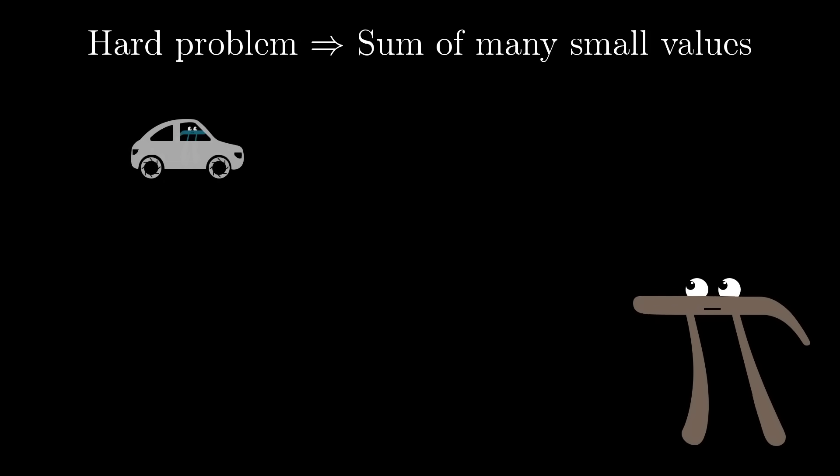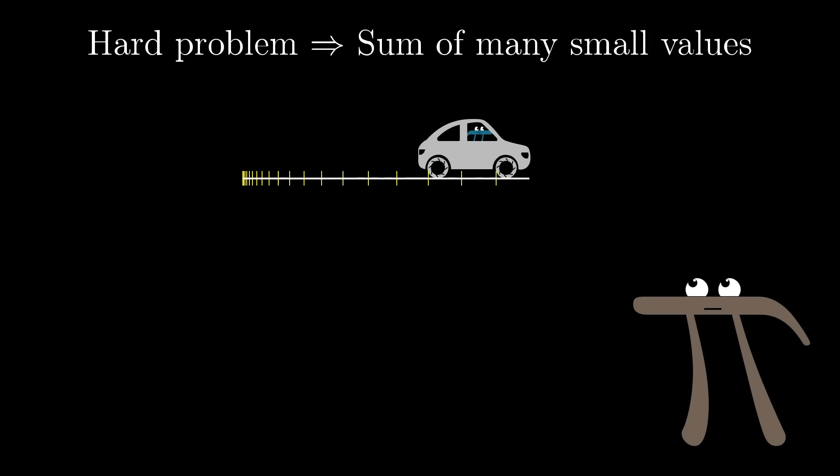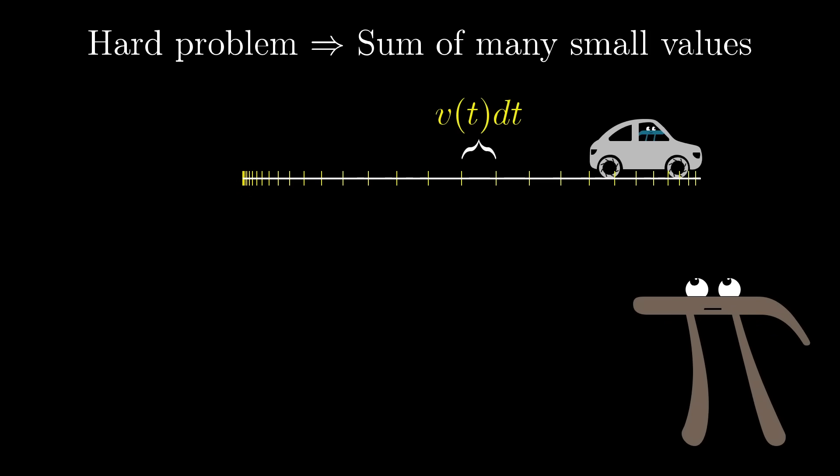A lot of other hard problems in math and science can be broken down and approximated as the sum of many small quantities. Things like figuring out how far a car has traveled based on its velocity at each point in time. In a case like that, you might range through many different points in time, and at each one multiply the velocity at that time times a tiny change in time, dt, which would give the corresponding little bit of distance traveled during that little time.